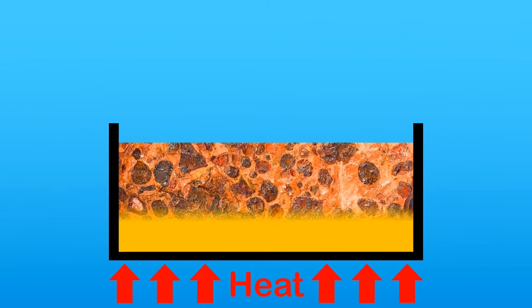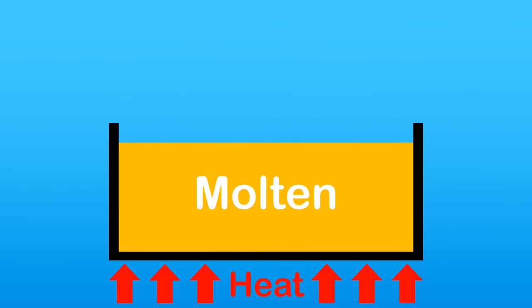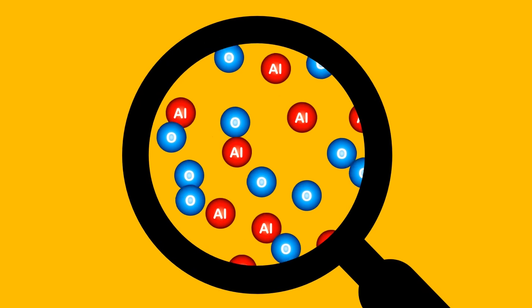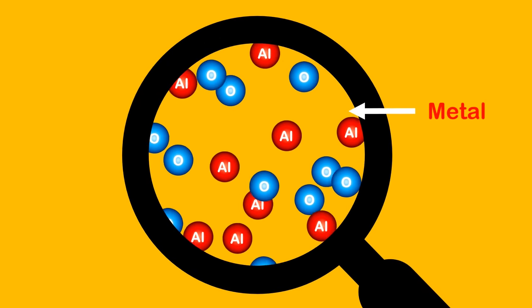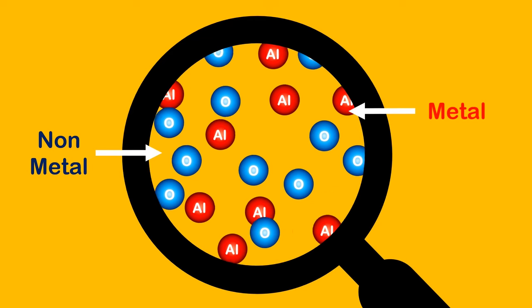In part one, we looked at the electrolysis of molten aluminium oxide. Molten ionic compounds are simpler because there are only two ions: a positive metal ion and a negative non-metal ion.